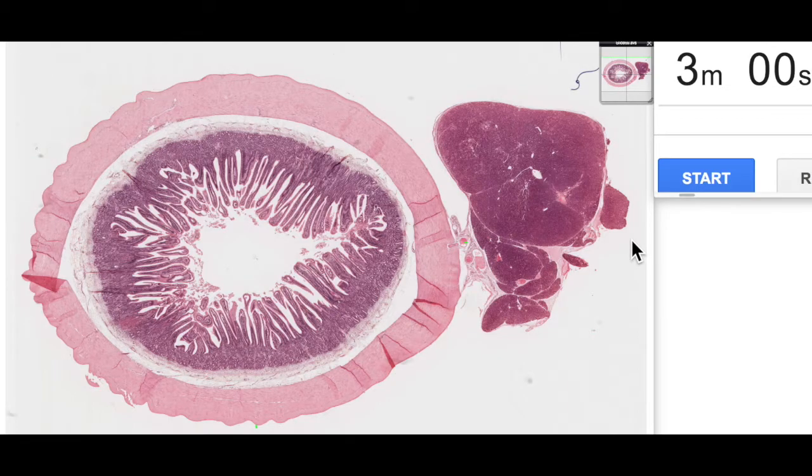G'day! Jamie Chapman with another episode of 3 Minute Histology. Today we're going to continue our look at different types of epithelium. Today's episode is looking at simple columnar epithelium.